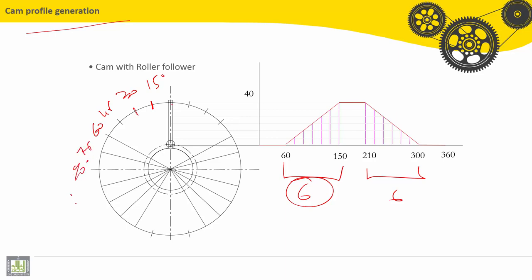And 90 degrees and so on. The first dwell is between 0 and 60 degrees. This is the first dwell.